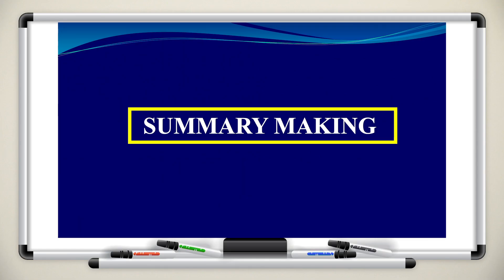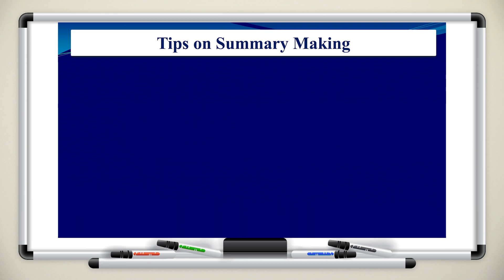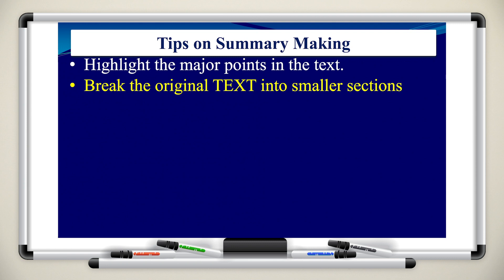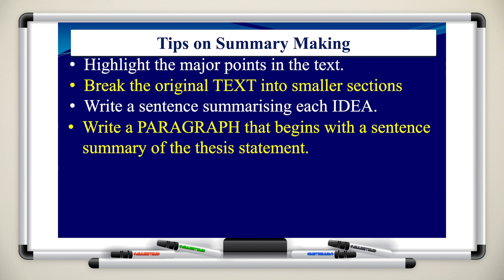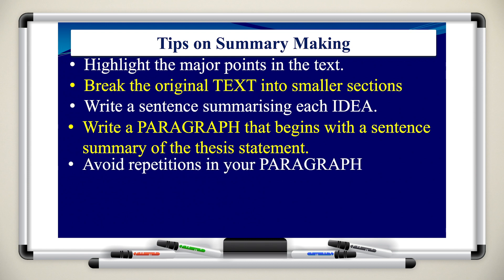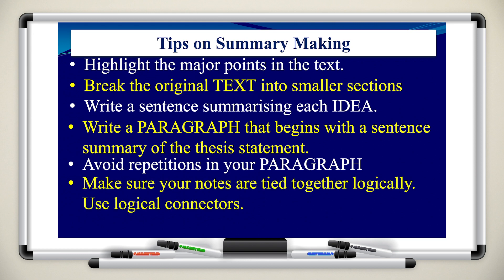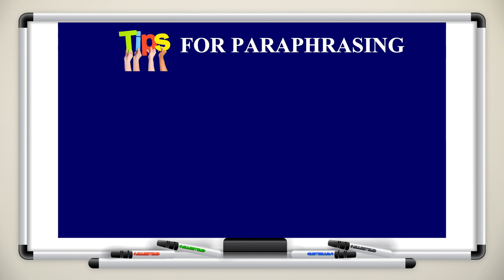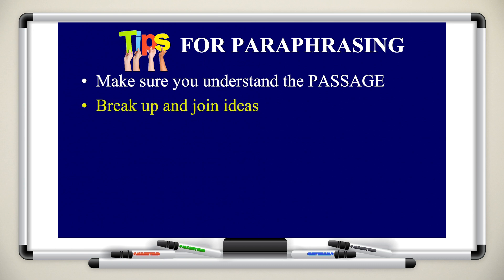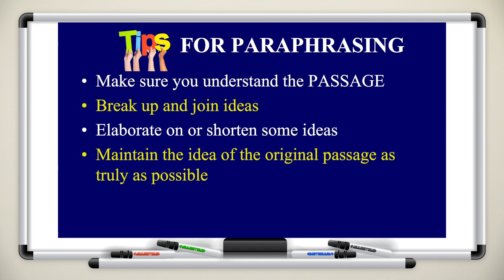Now we're done with the setbook and vocabulary questions. Let's take a look at how we can write a summary — it's very easy, don't worry. First, highlight the major points in the text, then break them into smaller sections. Write a sentence summarizing each idea separately, then put them in a paragraph beginning with a thesis statement — the main idea. Avoid repeating yourself and tie your notes together using connectors like 'in addition' or 'moreover.' Use your own words and paraphrase. Paraphrasing means you understand the passage, break up and join ideas together, shorten the ideas, and maintain the original meaning but use your own words — you don't change the idea, just the wording.